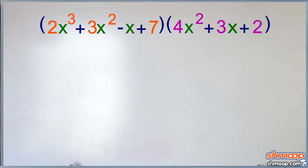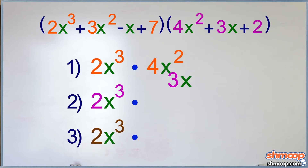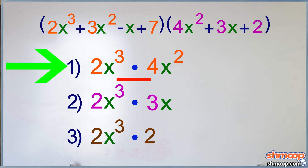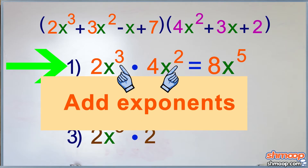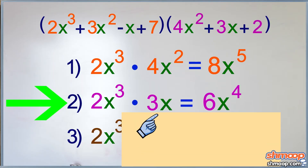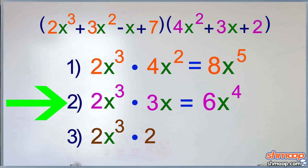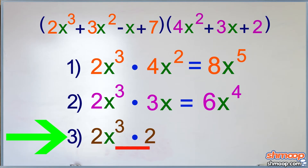Okay, so we start with the 2x cubed in the first polynomial and multiply it by every term in the second. So 2x cubed times 4x squared is 8x to the fifth. 2x cubed times 3x is 6x to the fourth — x is just x to the first, so you add the exponents. And then 2x cubed times 2 is 4x cubed.